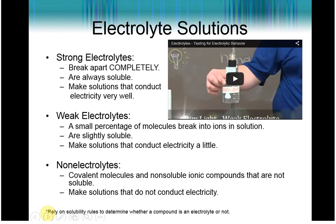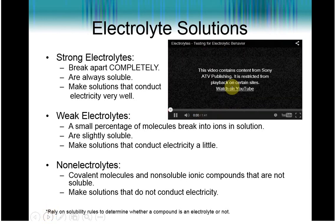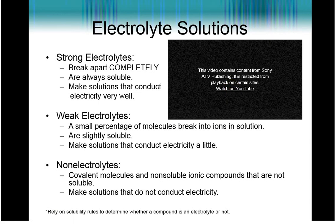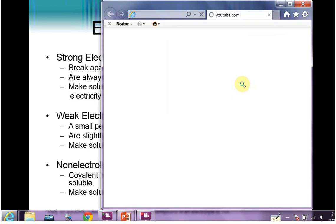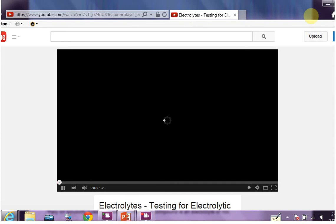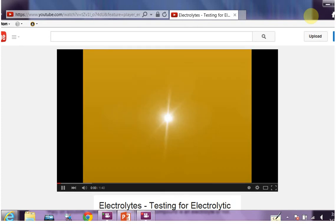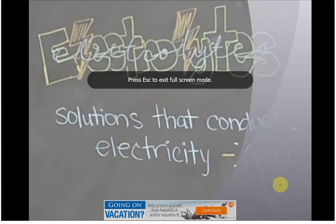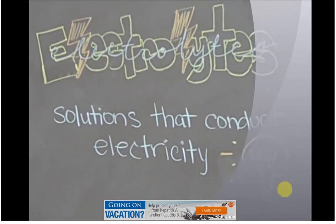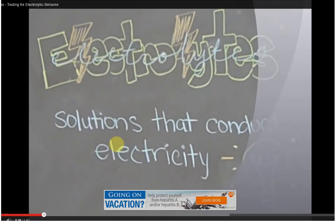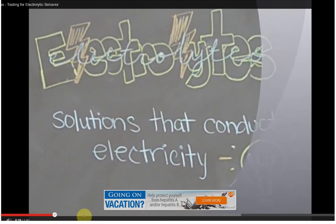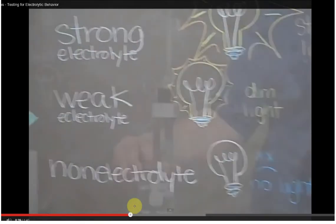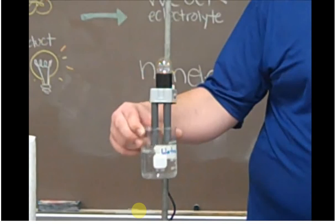Now, strong electrolytes are going to be those compounds that break apart completely. Strong electrolytes are going to be compounds that are always soluble and ionic compounds that break apart very well. With that in mind, we can usually test a solution to see if they are strong electrolytes. Because a strong electrolyte is going to conduct electricity very well.